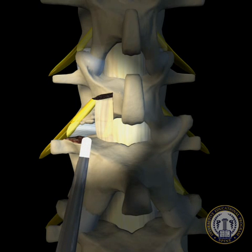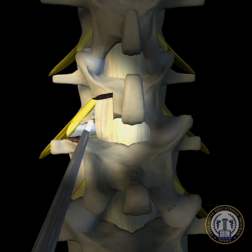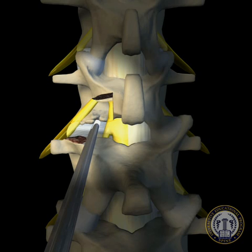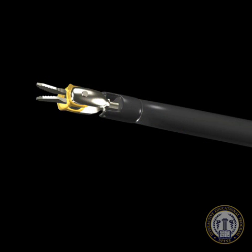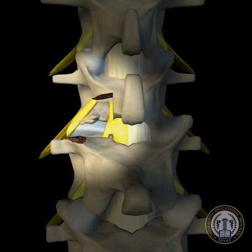The ligamentum flavum covering is now removed in a stepwise fashion using Kerrison rongeurs to expose the traversing and exiting nerve roots. Epidural bleeding frequently occurs during this step and may be controlled using bipolar cautery and thrombin-soaked gel foam. Though it is unnecessary to expose the entire exiting nerve root, it is important to be aware of both the root's location underneath the superior pedicle and the amount of space between the medial edge of the exiting nerve root and the lateral margin of the traversing root.